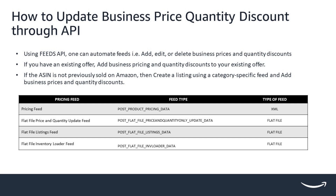Now let us see how to update business price and quantity discounts through the API. The only prerequisite for an Amazon business selling partner is to create an SP API application. Using the Feeds API, you can automate these feeds to add, edit, or delete business price and quantity discounts. If you have an existing offer, you do not have to create a new offer for business pricing and quantity discounts.